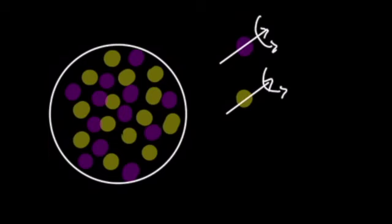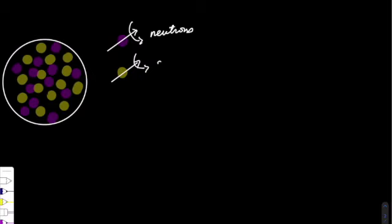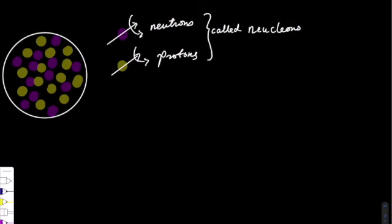The neutrons and protons can spin about their own axis. These are together called nucleons as they are found in a nucleus.